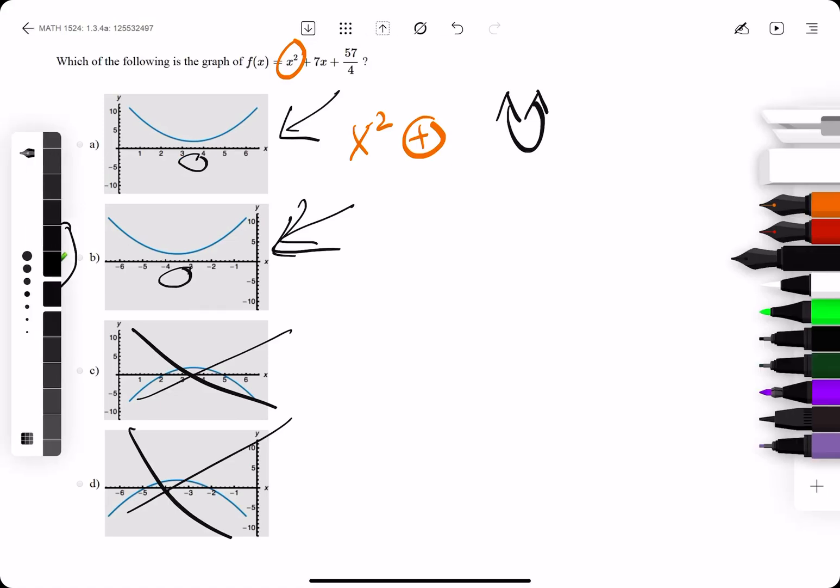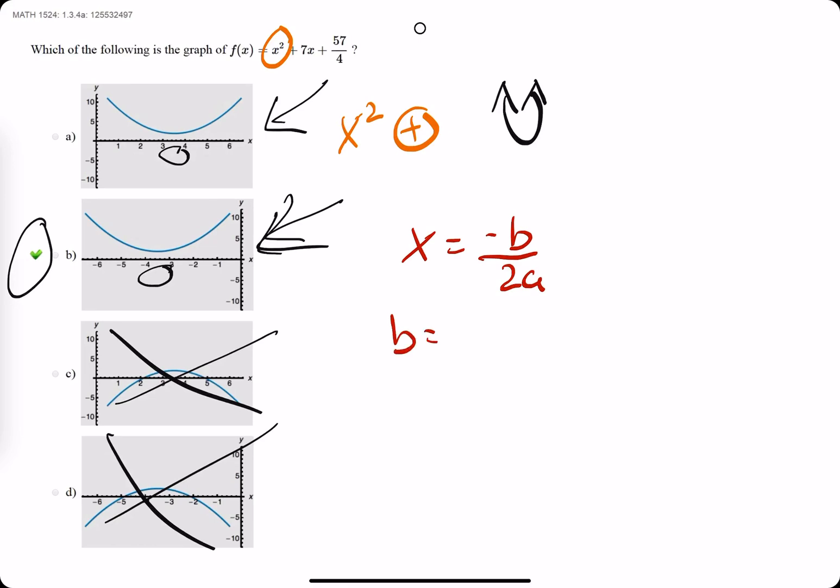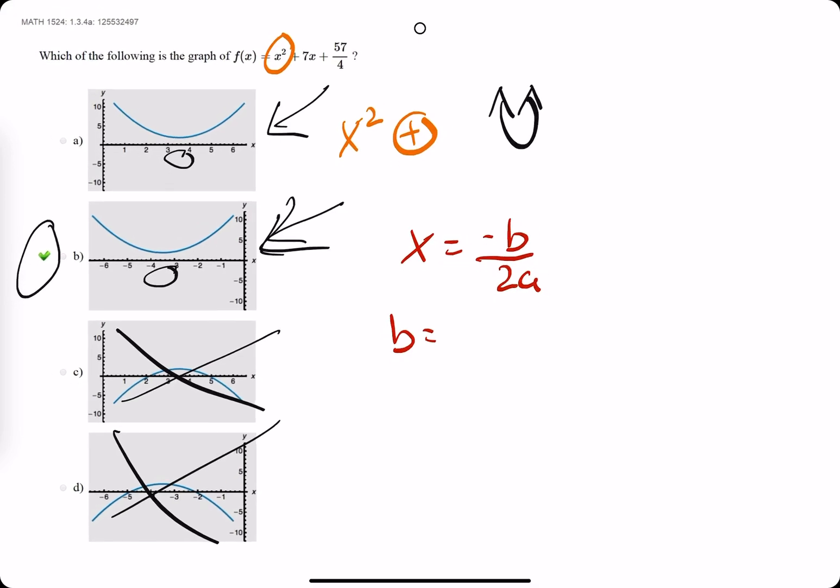So we use our equation. We're going to do x equal to negative b over 2a. In this case, our b value, or the coefficient for the x term, is a 7 because we have 7x.